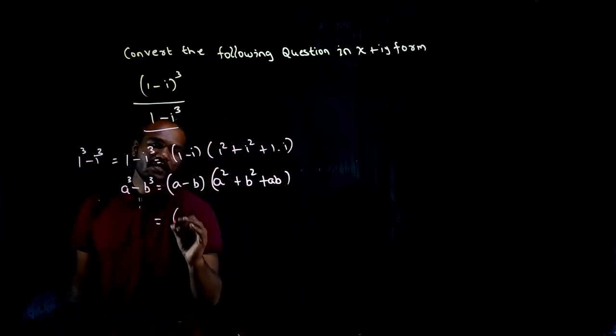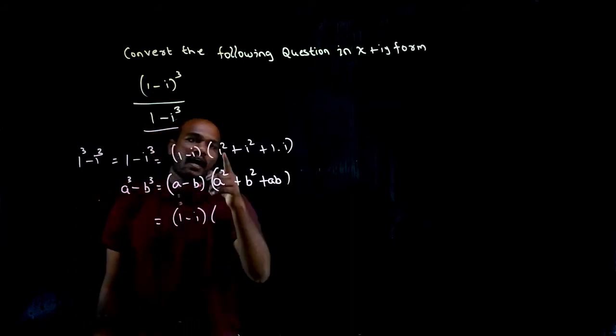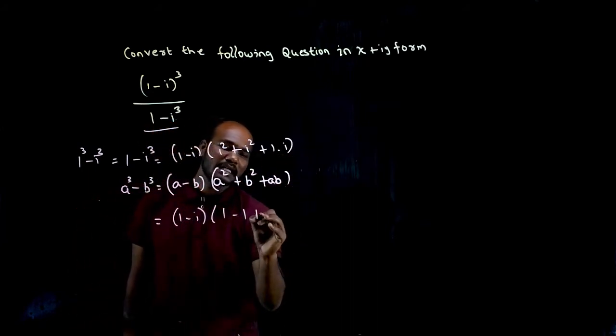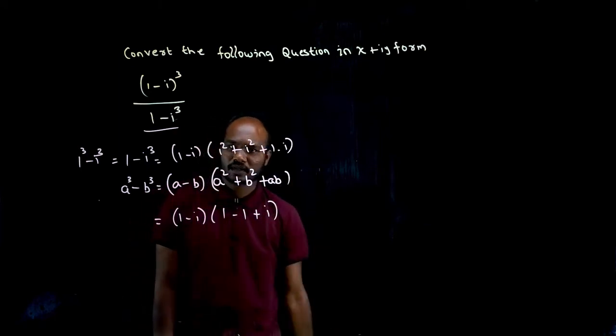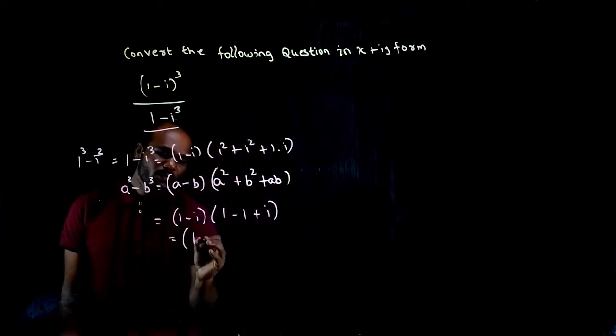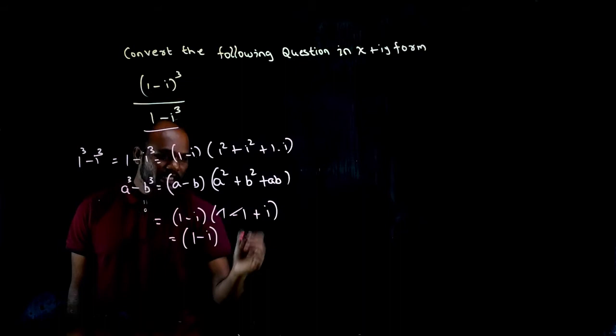Now I'll solve this. (1-i) times (1² is 1, i² is -1, plus 1·i is i). So what did I get? (1-i) times (1 and -1 get cancelled),